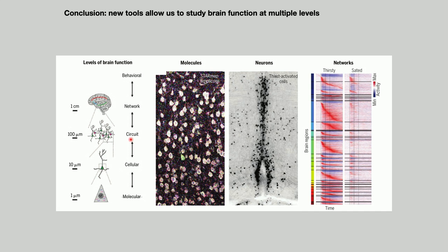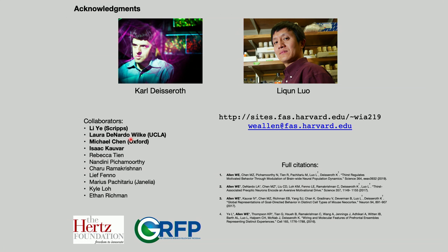In conclusion, we developed different tools that allow us to study the brain at multiple levels — to identify the specific neural circuits responsible for the production of thirst motivation, and to understand how those neural circuits impact the rest of the brain and produce brain-wide states that implement this specific thirst-motivated behavior. Thank you to all my collaborators and my advisors, Carl Deisseroth and Liqun Luo.